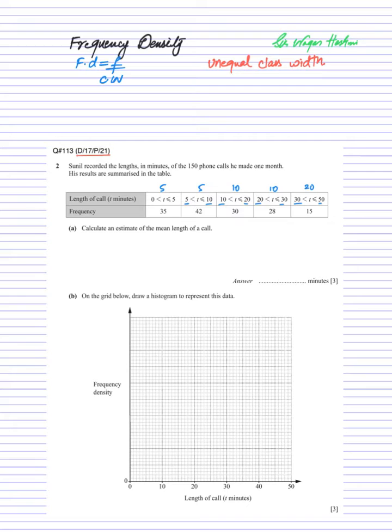For the first case, frequency is 35 and class width is 5, so that will be 7. For the second case, frequency is 42 and class width is 5, it's 8.4. Third one, frequency is 30 and class width is 10, so it's 3. Fourth, 28 frequency and class width is 10, so it's 2.8. And the last one, frequency is 15 and class width is 20, so it's 0.75.